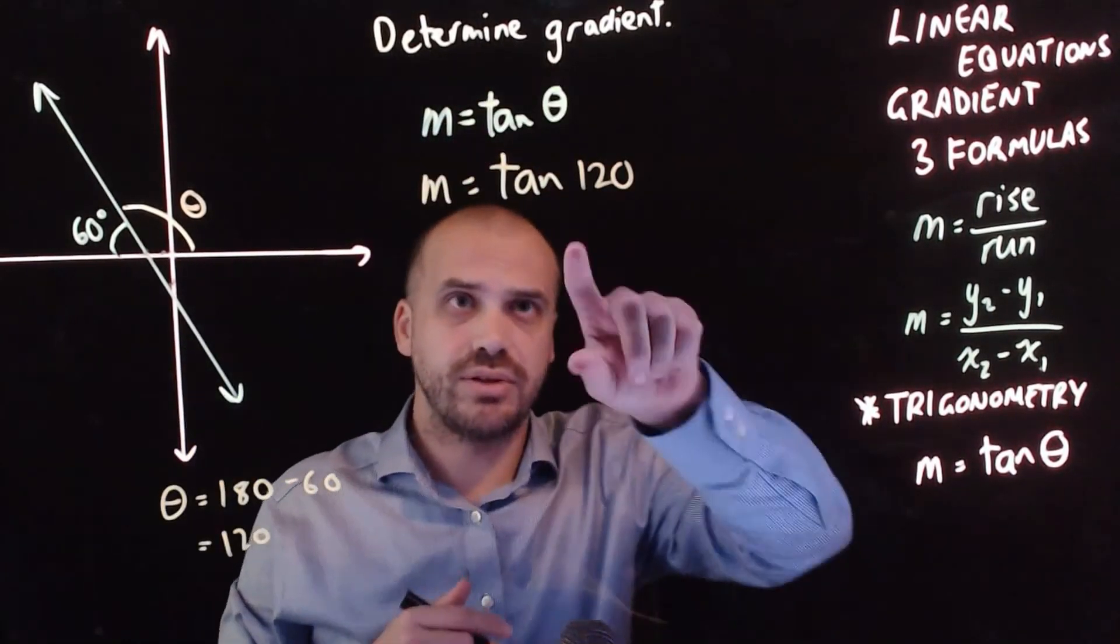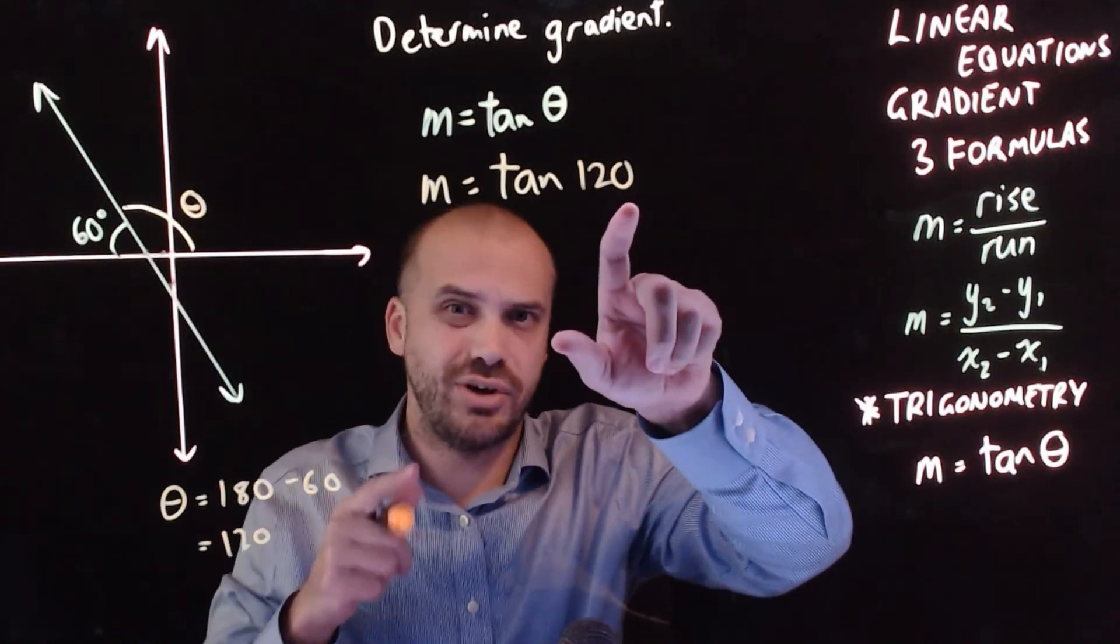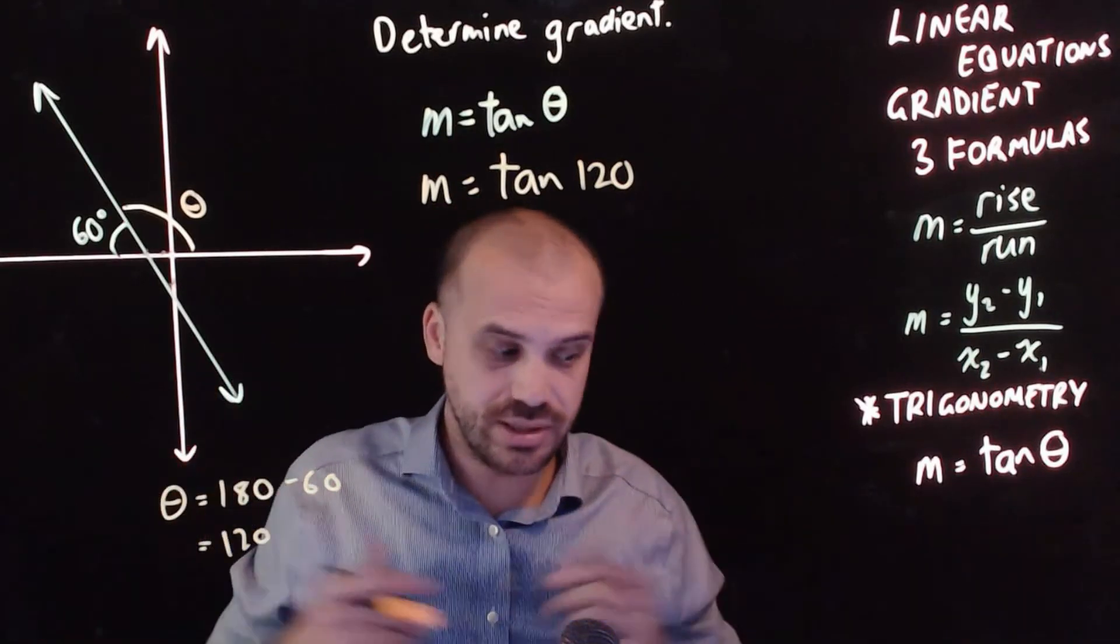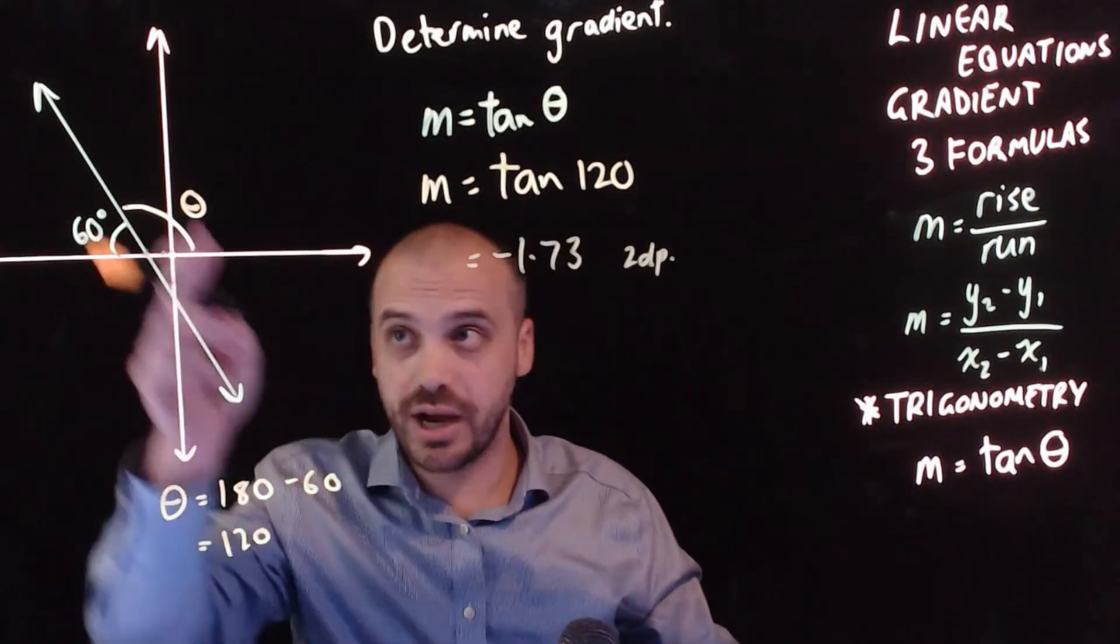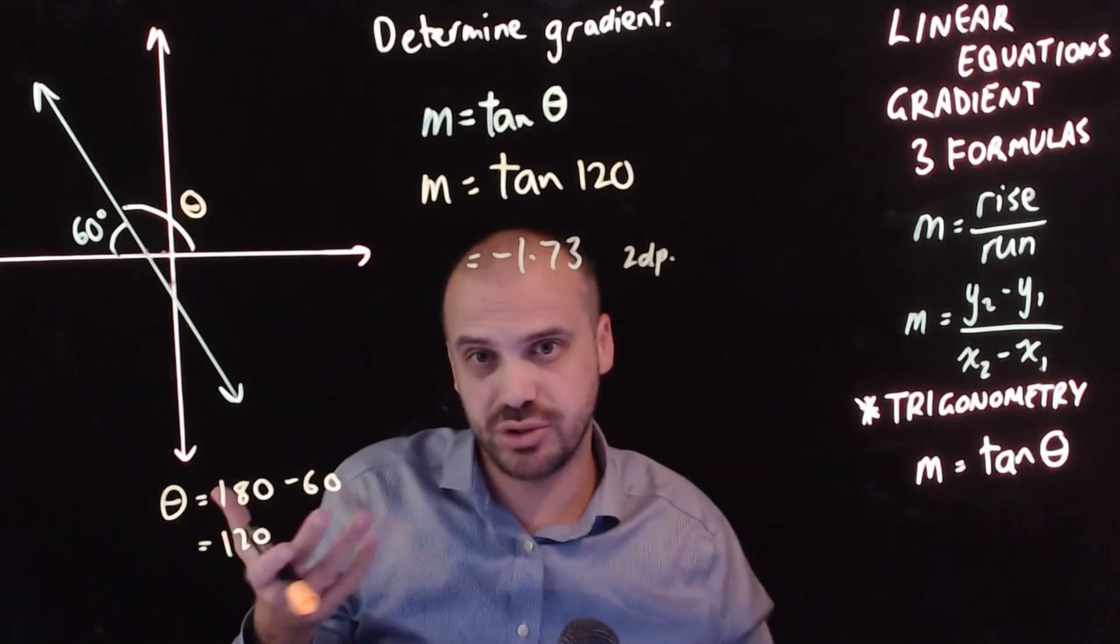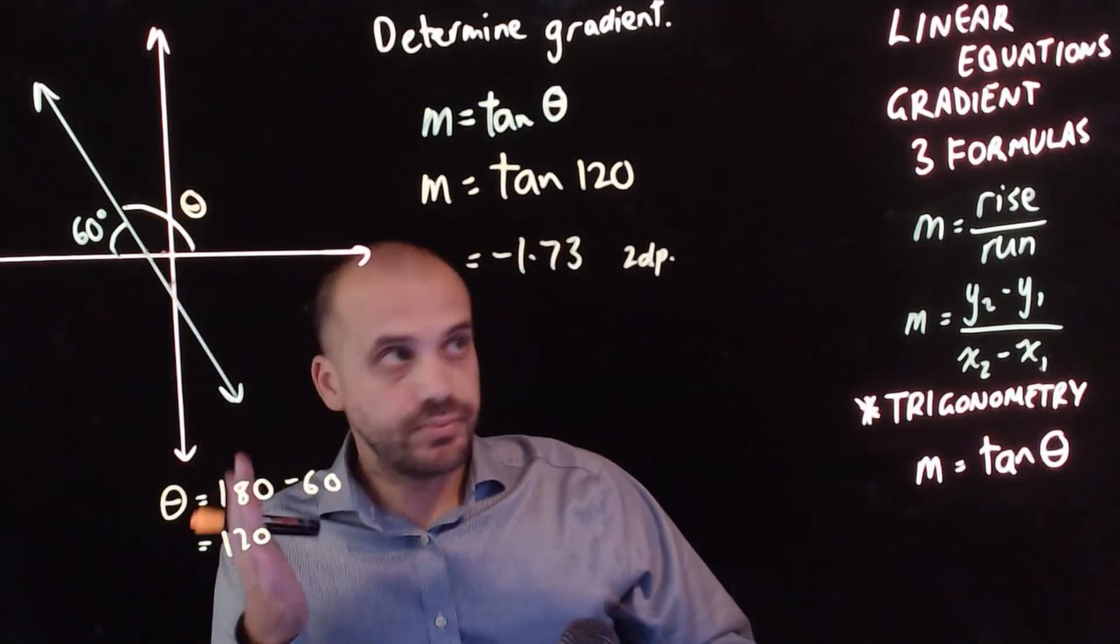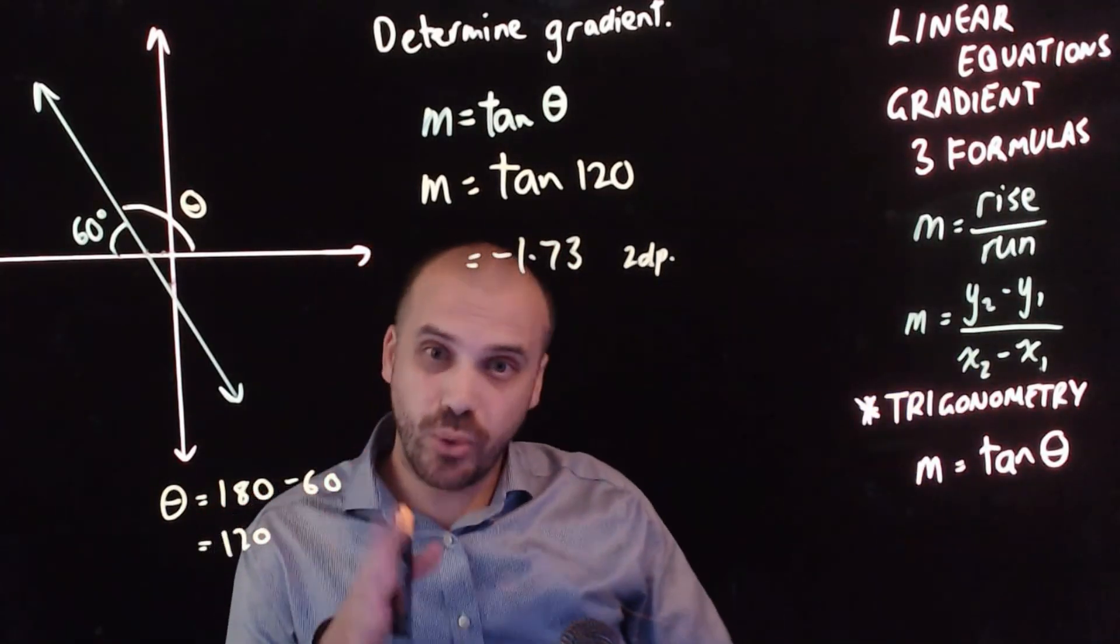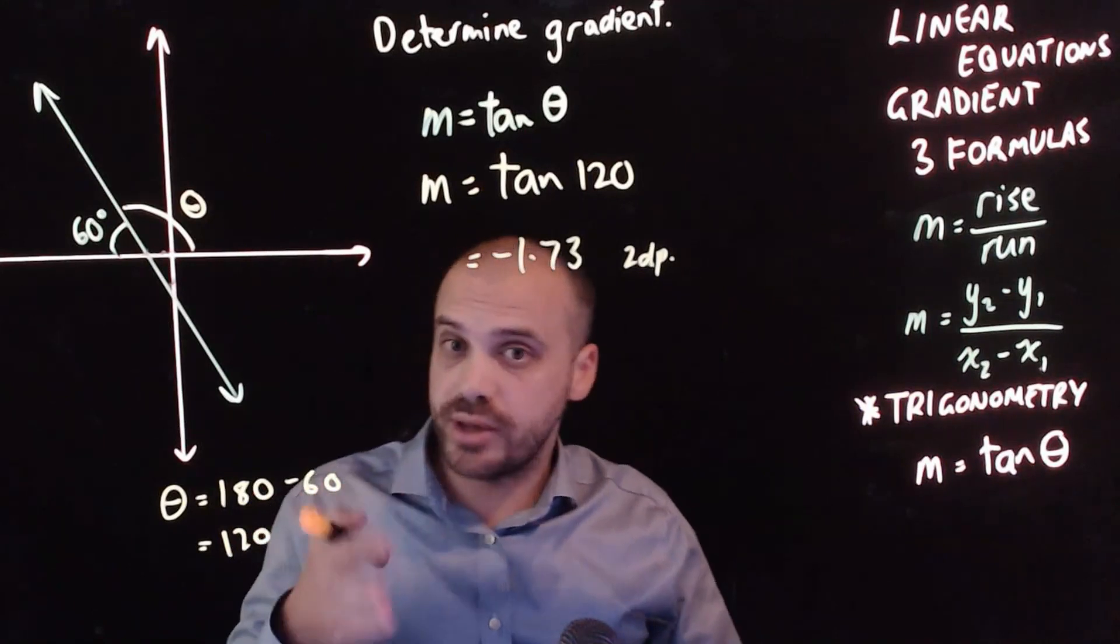You've never dealt with an angle greater than 90 degrees in a trigonometry question, which is essentially what this is. But it'll work. So the gradient of this line is negative 1.73 to two decimal places. So that's linear equations, gradients, three different formulas. And they're all useful. You should use them when you need them.